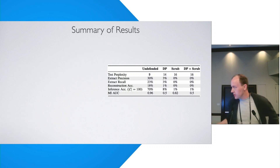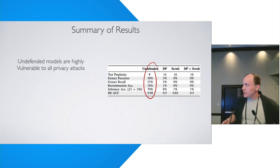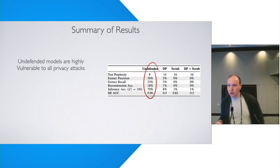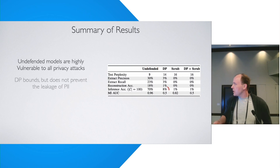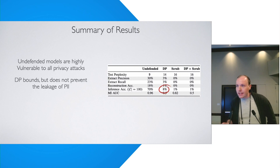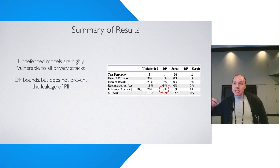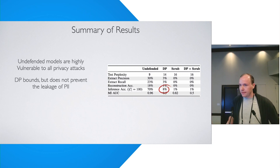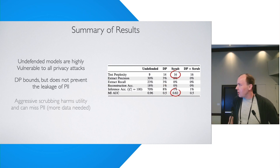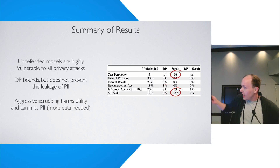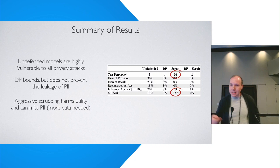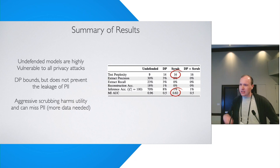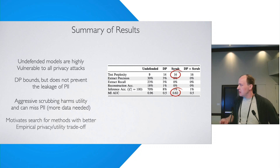To summarize: undefended models are highly vulnerable to all sorts of attack. DP bounds but does not prevent the leakage of PII, meaning DP needs to be supplemented with some other defense — and the question of what defenses and how to optimize the privacy-utility trade-off remains open. Scrubbing harms utility and has other flaws: it can miss PII, it's context-dependent, and it is very hard to accurately anonymize text datasets.